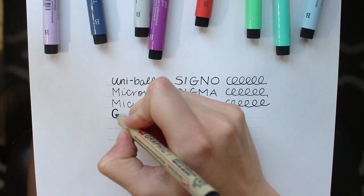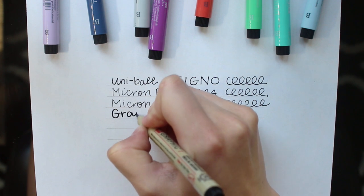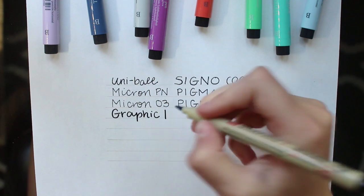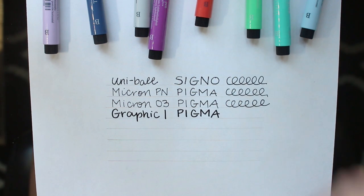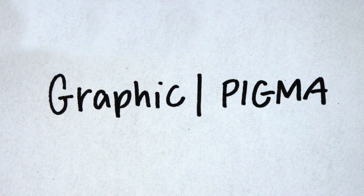Next we have the Pigma Graphic 1 by Sakura. This is a one millimeter wide felt tip marker. The shape is like a bullet as opposed to a chisel tip, which makes it good for writing in journals. Because it has that archival ink, this marker will not bleed through the paper like other markers do.